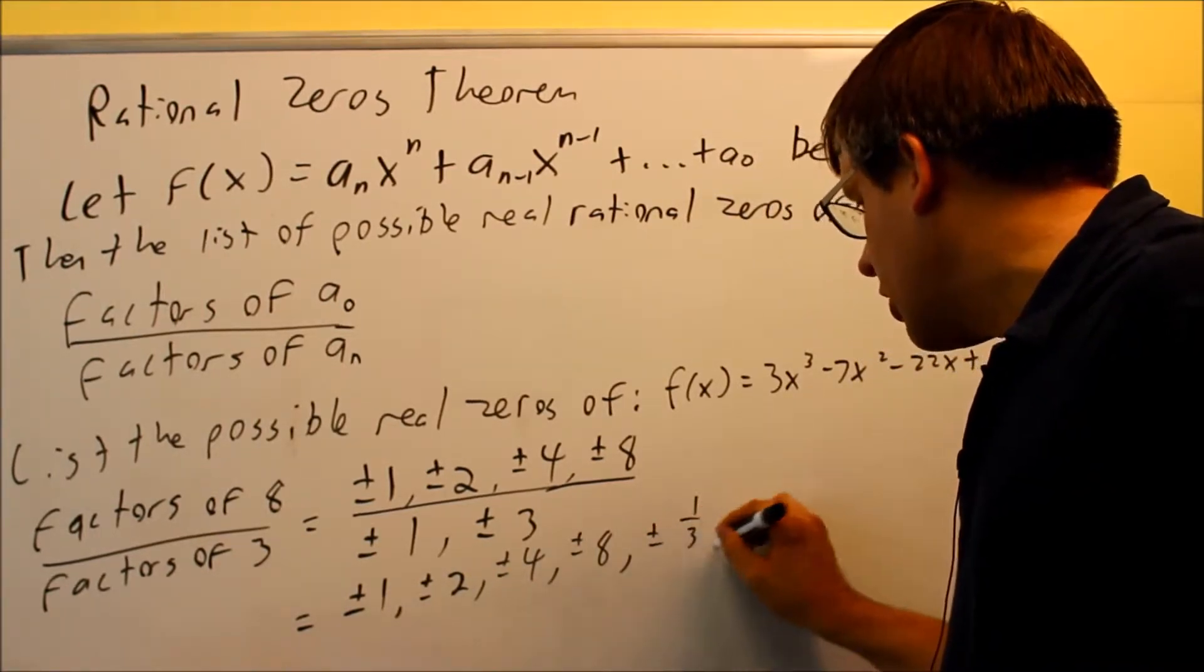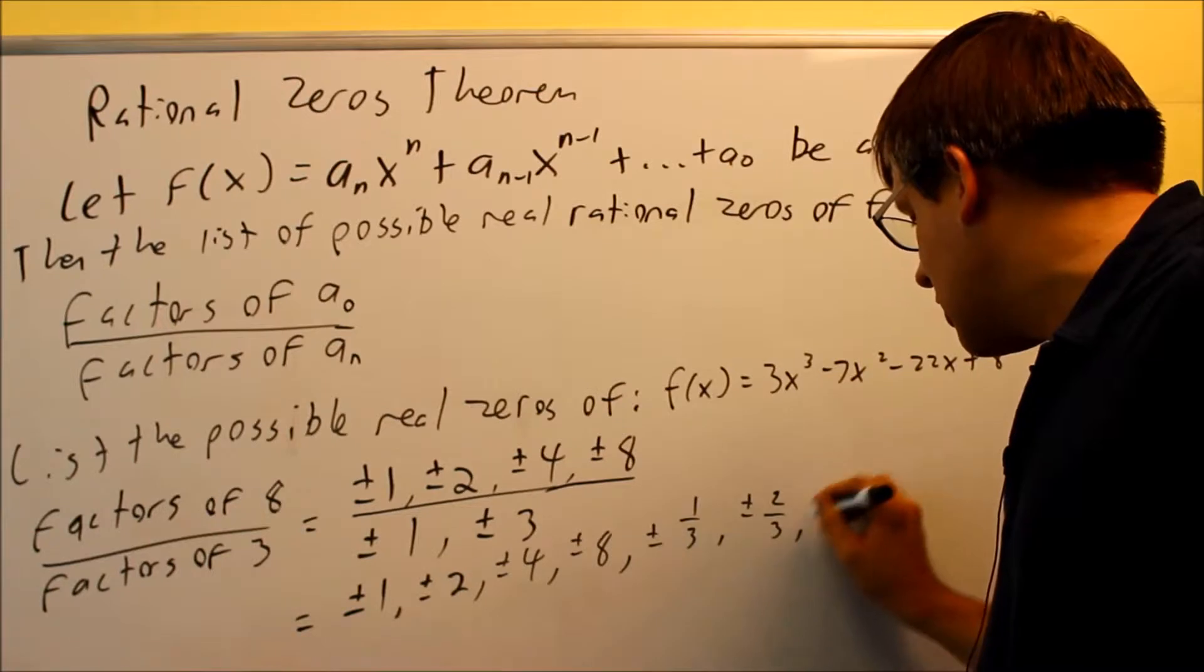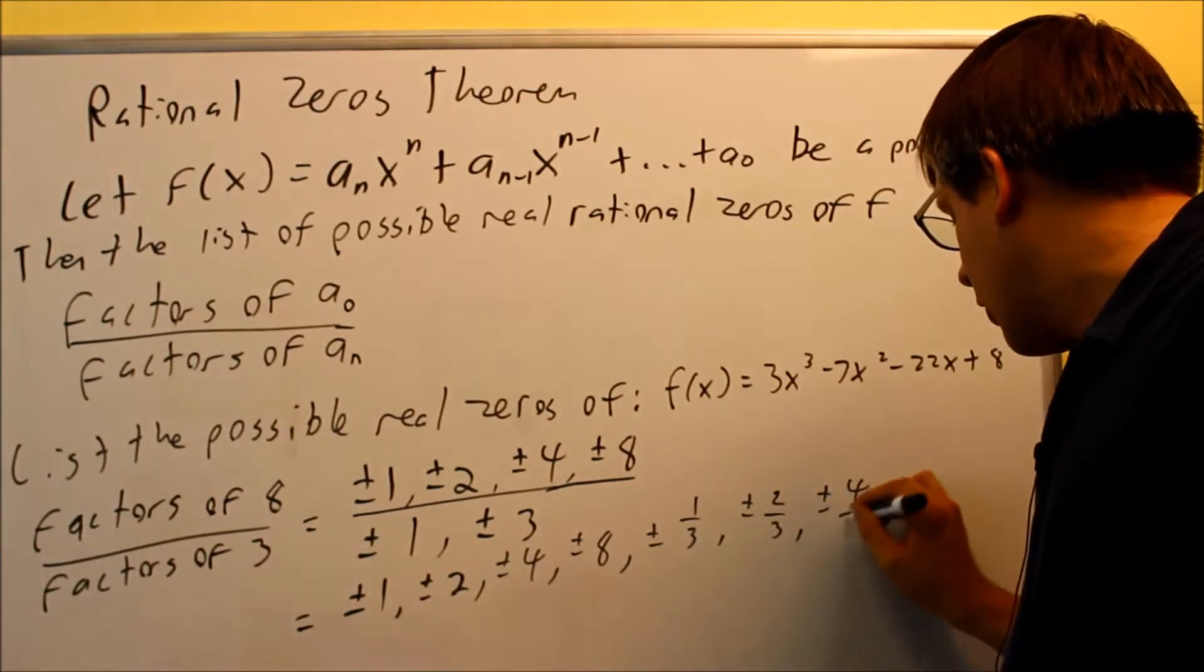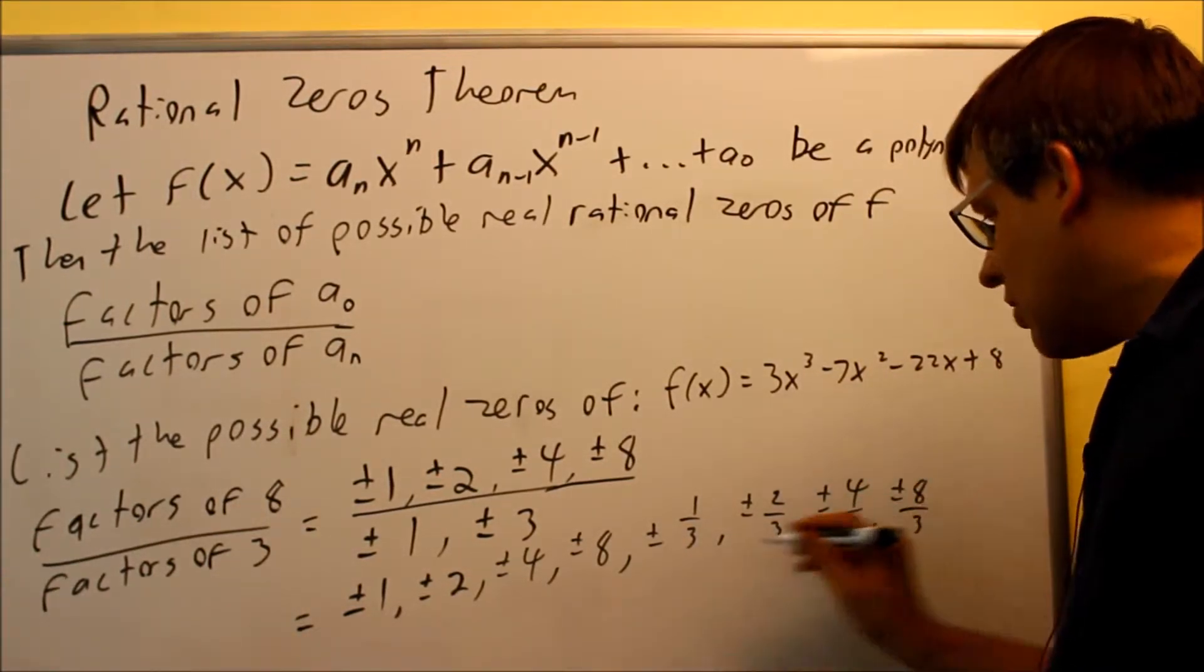Then you're going to take all of them on top and divide by 3. So next we're going to have plus or minus 1 third, plus or minus 2 thirds, plus or minus 4 thirds, and plus or minus 8 thirds.